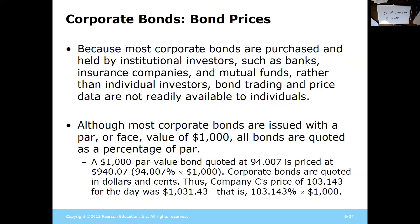After original issuance, bonds get sold at different amounts. Since they're purchased in large blocks, people state them as a percentage of face value. For example, a bond quoted at 94.007 means the cost is 94% of face value — so on a $1,000 bond that's $940.07, and on a $100 bond that's $94.007.